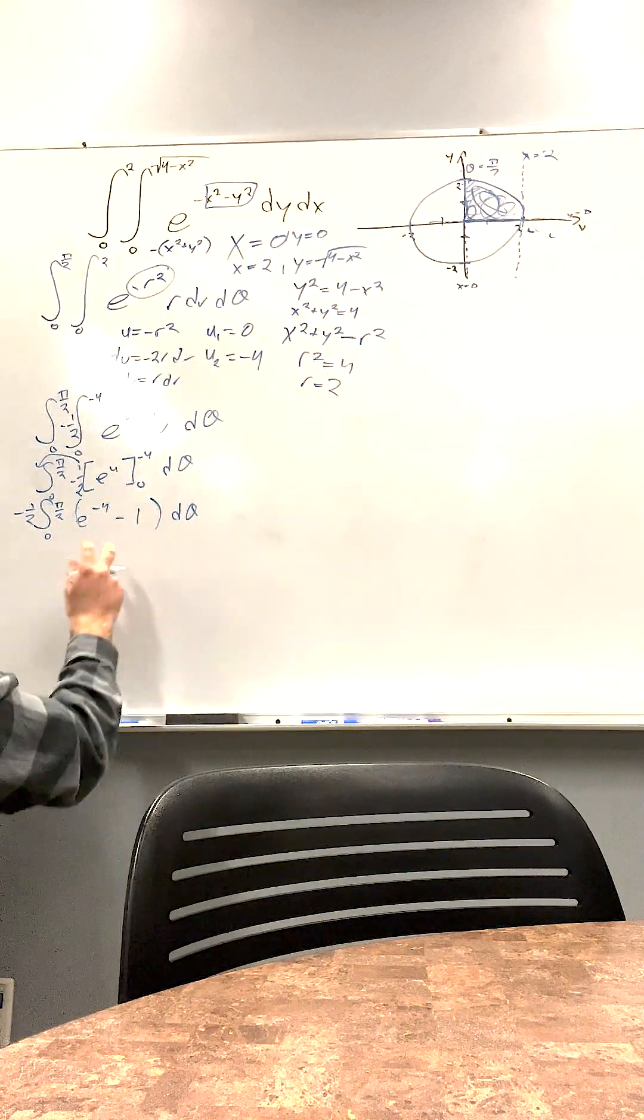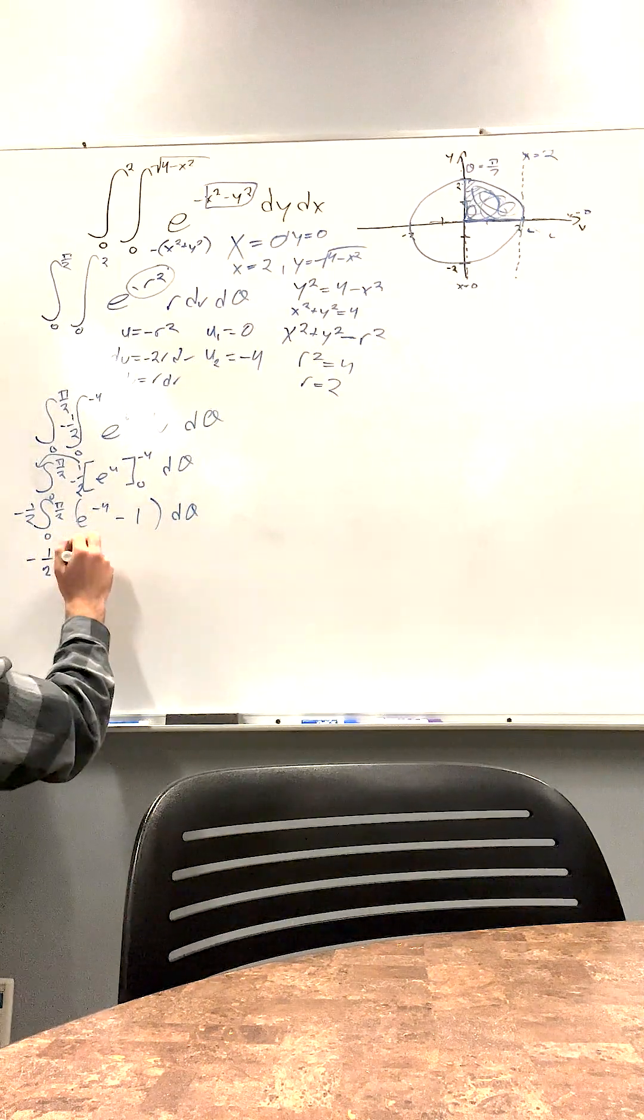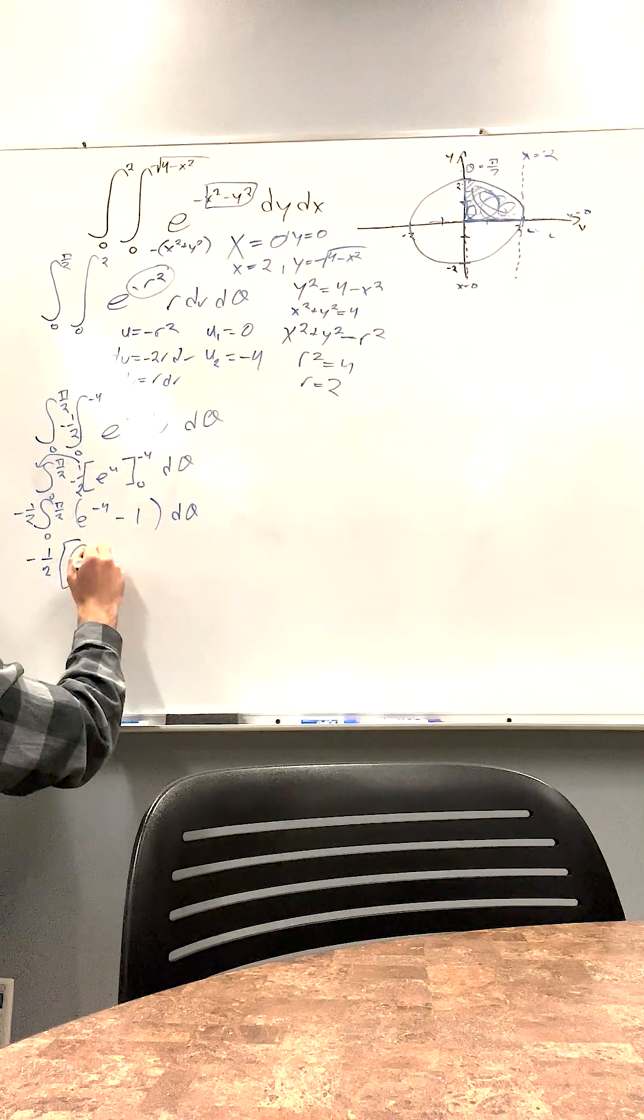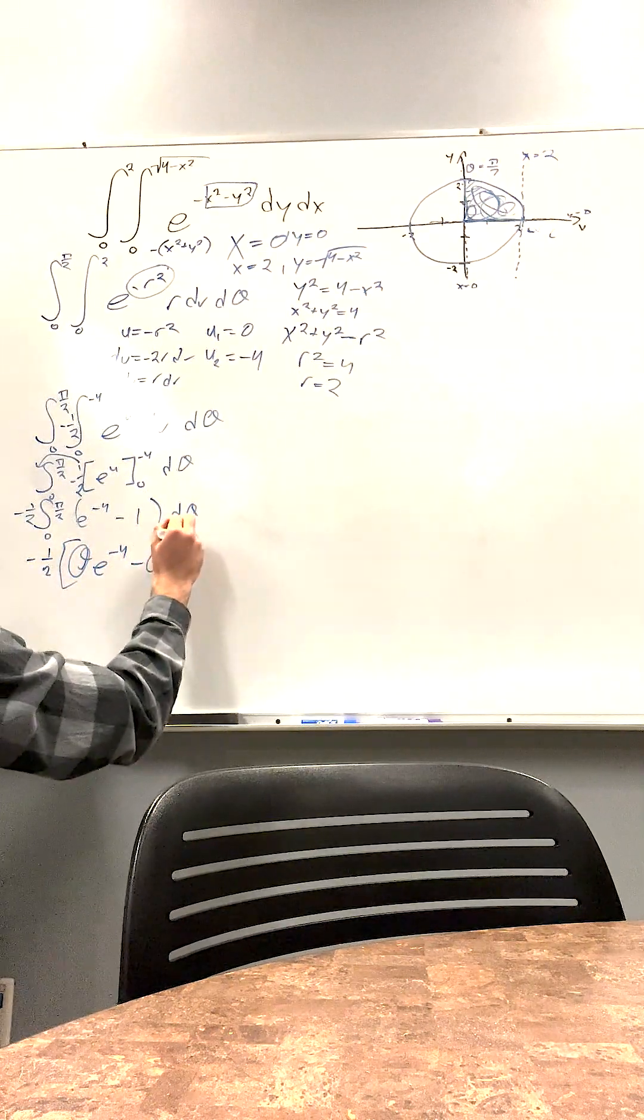Now we solve this again. These are both constants in d theta. So it's going to be negative 1 half out front. Theta, e to the negative 4 minus theta, from 0 to pi over 2.